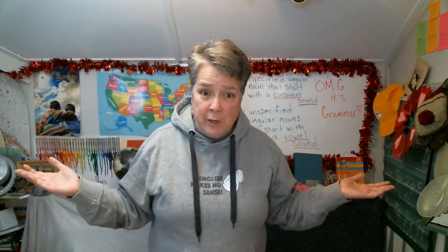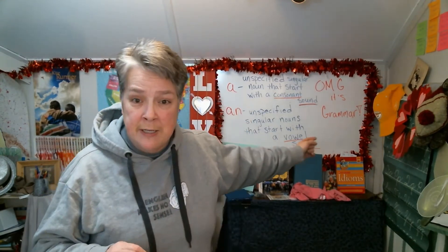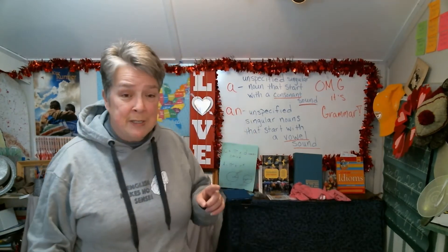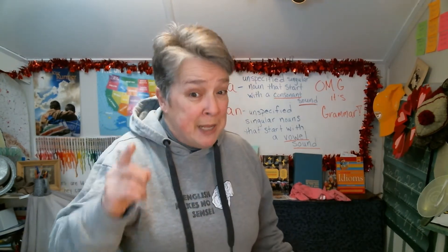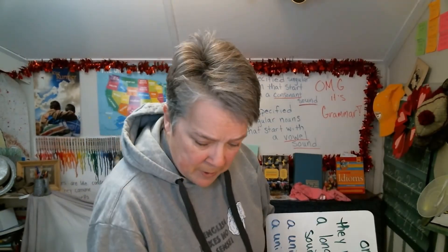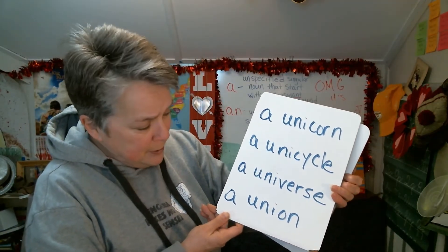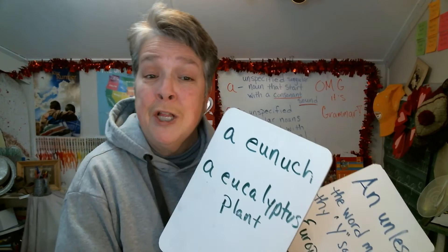Because they would sound so odd — 'an university' just doesn't work. You just have to remember that. So: 'a' for unspecified singular nouns that start with a consonant. And 'an' for unspecified singular nouns that start with a vowel sound. Remember your vowels: A, E, I, O, or U. But if that U is a long U, then you start with 'a': a university, a uniform, a unicorn, a unicycle, a universe, a union. If it makes the Y sound — a European, a eunuch, a eucalyptus plant — you put 'a.' Because English always has an exception to the rule. That's just the way it is.